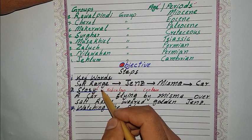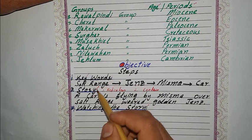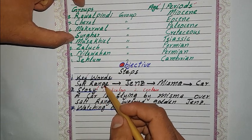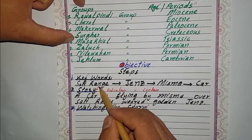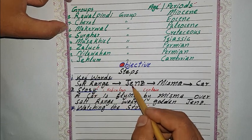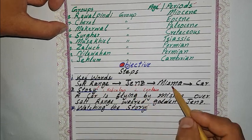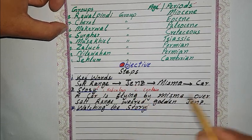The first step is keywords. The keywords for the stratigraphic group names of the Salt Range are: salt range, jeans, mesma, car.